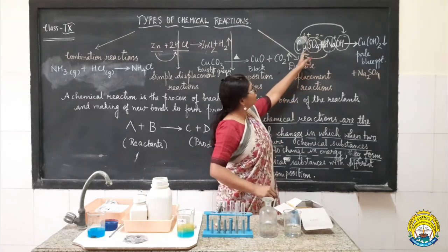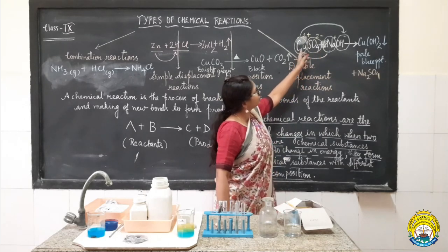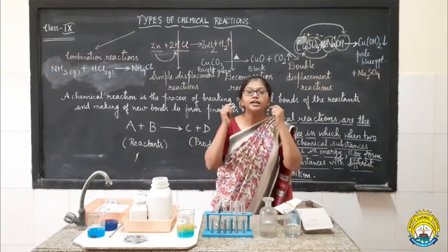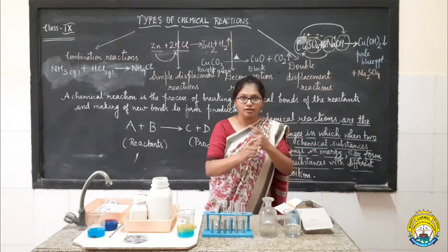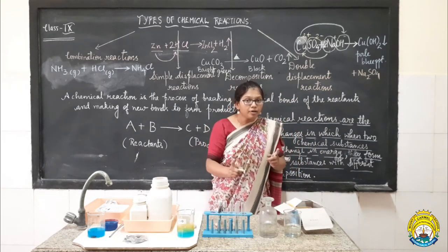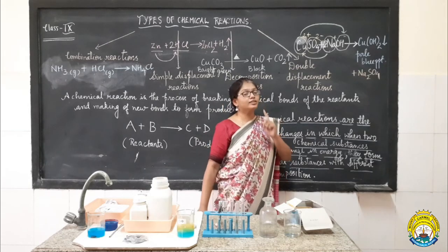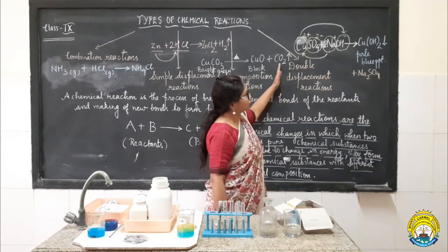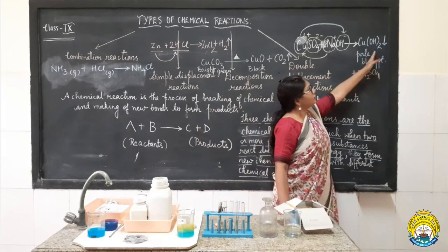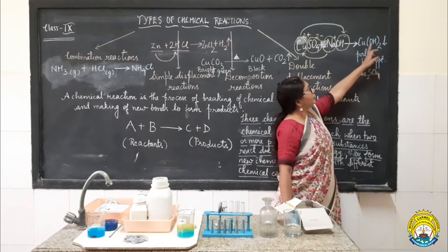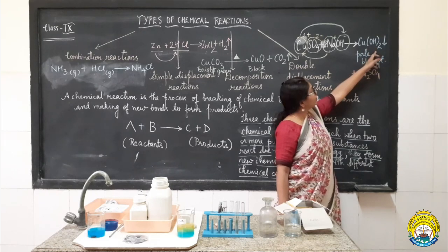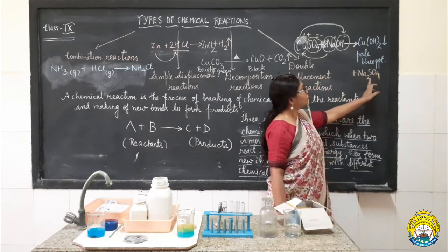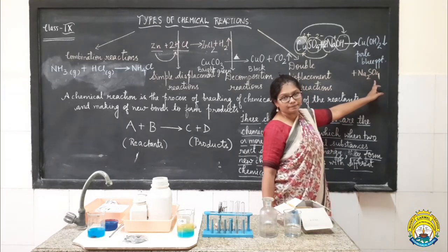So sodium is taking copper's place and copper is taking sodium's place — two ions are displacing each other. So it is called a double displacement reaction. Because of this double displacement reaction, the product we obtained was copper hydroxide, which is a displaced product, and also sodium sulfate.